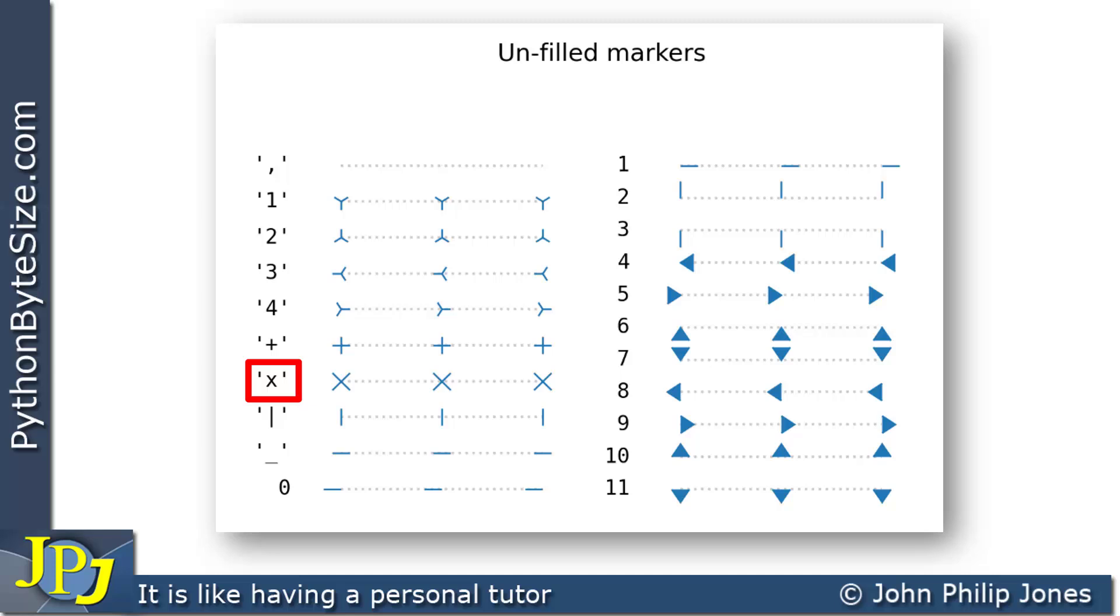gives us this X on the plot, which is the thinner drawn X. It's drawn with thinner lines, unlike when we use the uppercase X. And, of course, you can see here, this is the underscore, which gives you this horizontal line drawn on the graph.